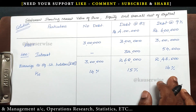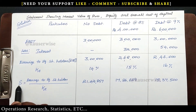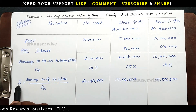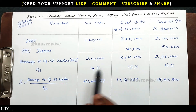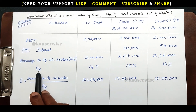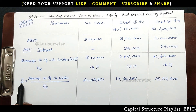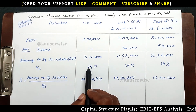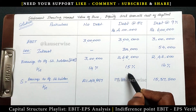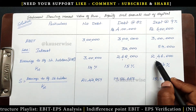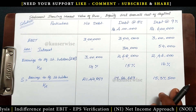With this, we can find out the market value of equity. S refers to market value of equity. The formula is: earnings available to equity shareholders divided by KE (cost of equity). Substituting the values: 3 lakhs divided by 14% gives the first S value; 2.68 lakhs divided by 15% gives the second; and 2.46 lakhs divided by 16% gives the third. So you will get the market value of equity shares for all three alternatives.